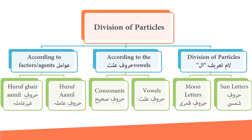Let's see the structure of particles for understanding it more clearly. Particles are divided into three: (1) based upon lam ta'rif (al) — the defining article; (2) based on vowel/consonant — huruf illa; (3) based on factors or agents — 'awamil. According to lam ta'rif, they are divided into sun letters (huruf shamsiyya) and moon letters (huruf qamariyya). Based on huruf illa, they are divided into vowels and consonants. Based on 'awamil, they are divided into 'amil and ghayr 'amil.